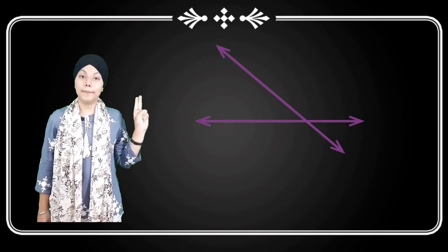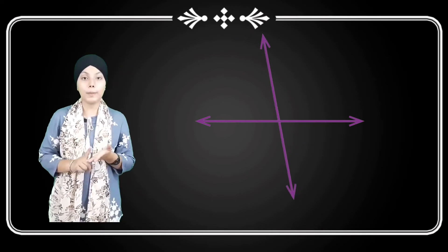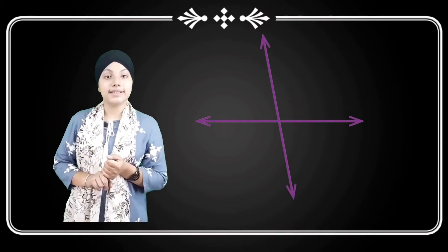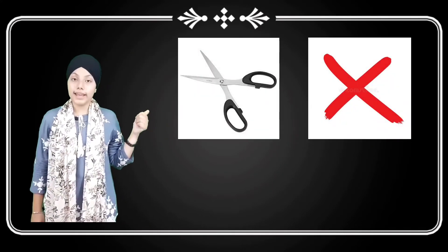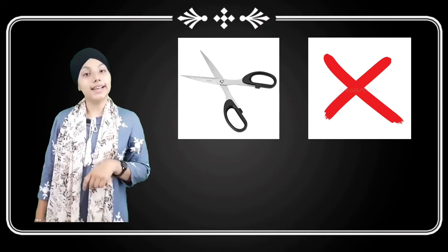When A and B cut or cross at a particular point, these are known as intersecting lines. Examples: scissors, cross. These two are examples of intersecting lines.